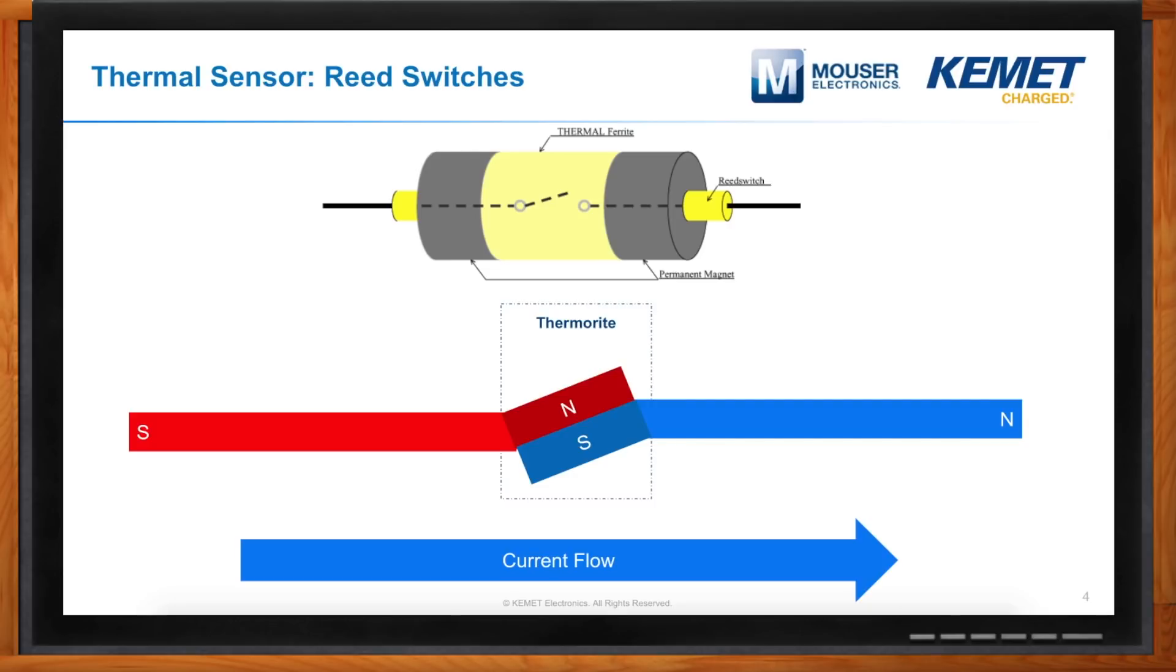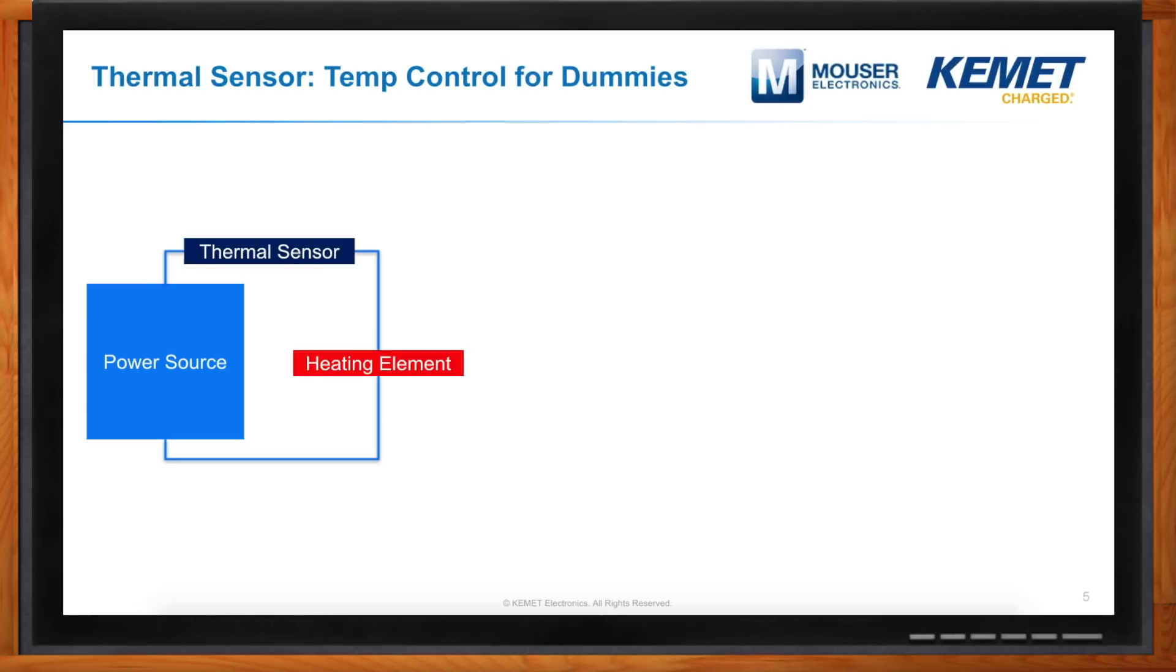So, imagine you have some sort of power source that is powering some type of heating element, and then in series with that, you have a thermal sensor. That thermal sensor will then allow current to pass from the power source to the heating element until the Curie point is reached. Once that Curie point is reached, then current flow will stop going from the power source to the heating element, and the device overall will cool off. Then once it has cooled off enough, the current will start to flow again, and heating will continue.